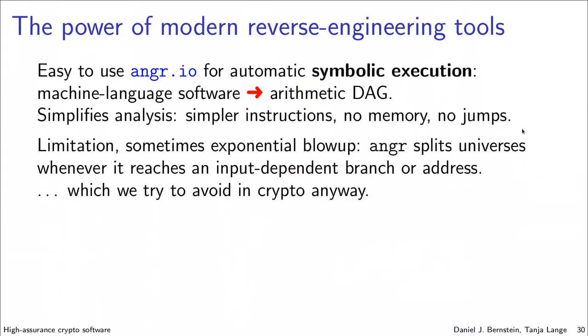No memory concerns, much simpler instructions, no jumps. Angr has a limitation: if there's a loop, it doesn't know what to do next. It splits it into pieces and says they happen with equal probability. But this is what we need.